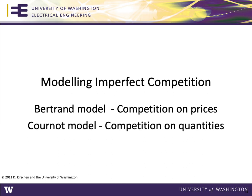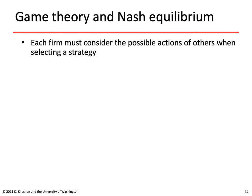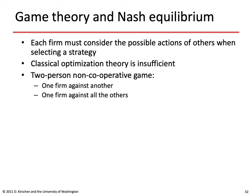Two basic models of imperfect competition are the Bertrand model, which assumes competition on prices, and the Cournot model, which assumes competition based on quantity. When a firm tries to maximize profit in a less-than-perfectly-competitive market, it must consider what others will do. Classical optimization theory is insufficient because the firm doesn't control all decision variables. We are dealing with a multi-person non-cooperative game — one firm acting against all others — requiring game theory.